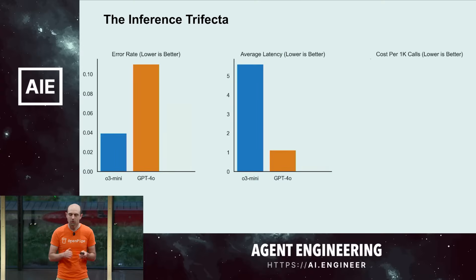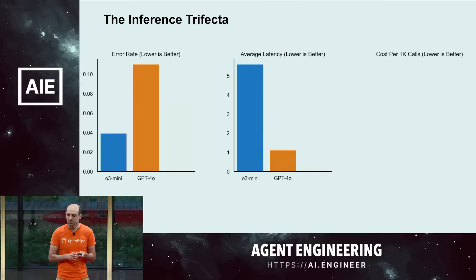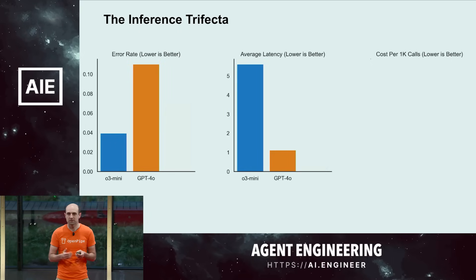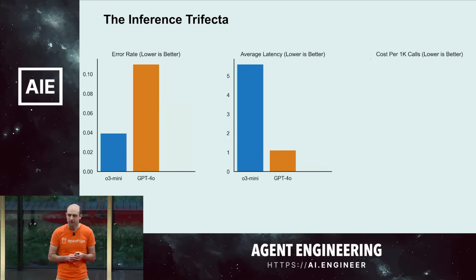You can compare the agentic system's final outputs to the human baseline and see if it was successful, which made this part relatively easy to calculate. On the latency side, GPT-4o is around a second to respond, and O3-mini takes about five seconds for their specific task.